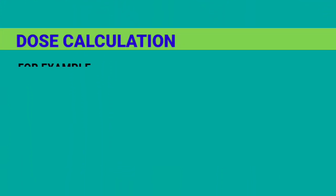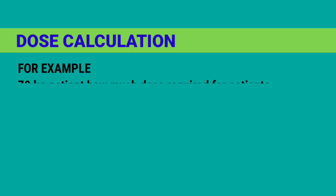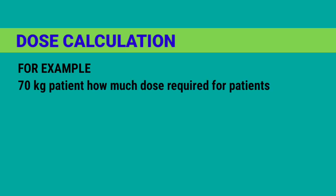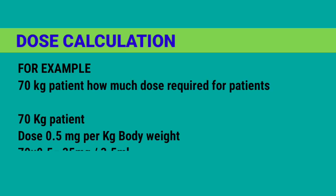Atracurium dose calculation example: for a 70kg patient, how much dose is required? For a 70kg patient, dose = 0.5mg per kg body weight: 70 × 0.5mg = 35mg, which equals 3.5ml.